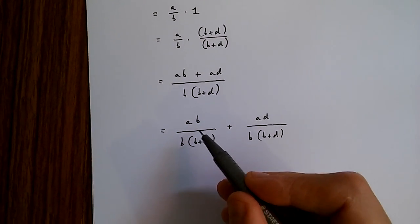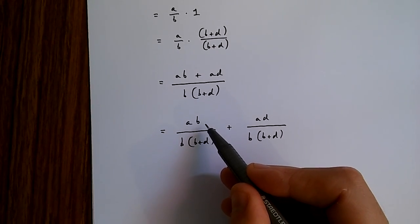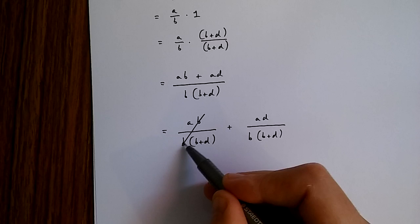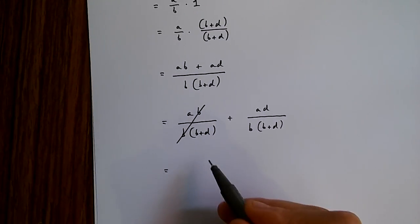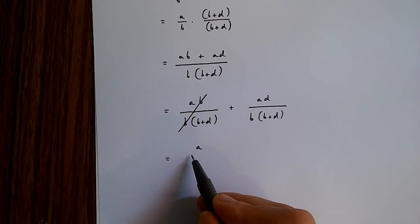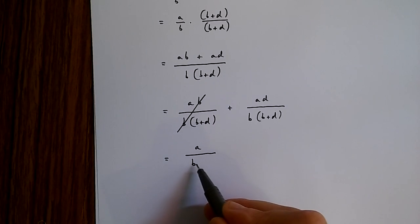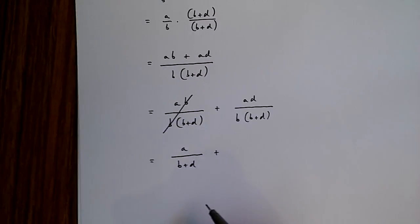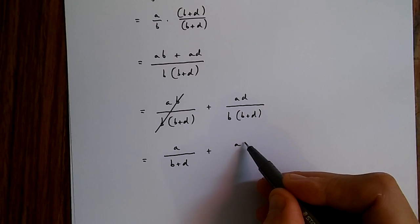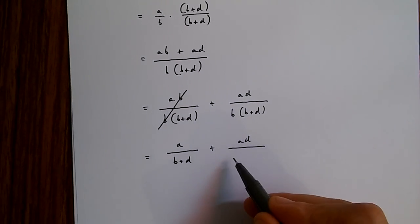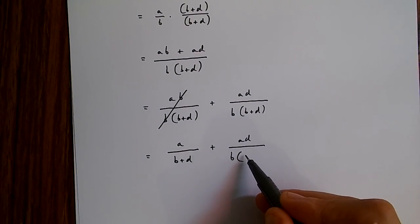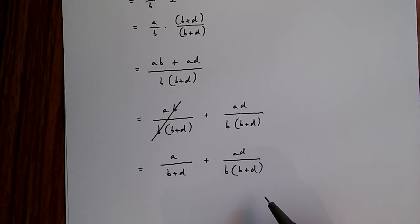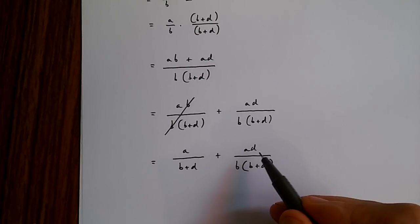Now, over here, we can delete the b at the top and bottom of this fraction. So here, we get a over b plus d plus ad over b times b plus d.